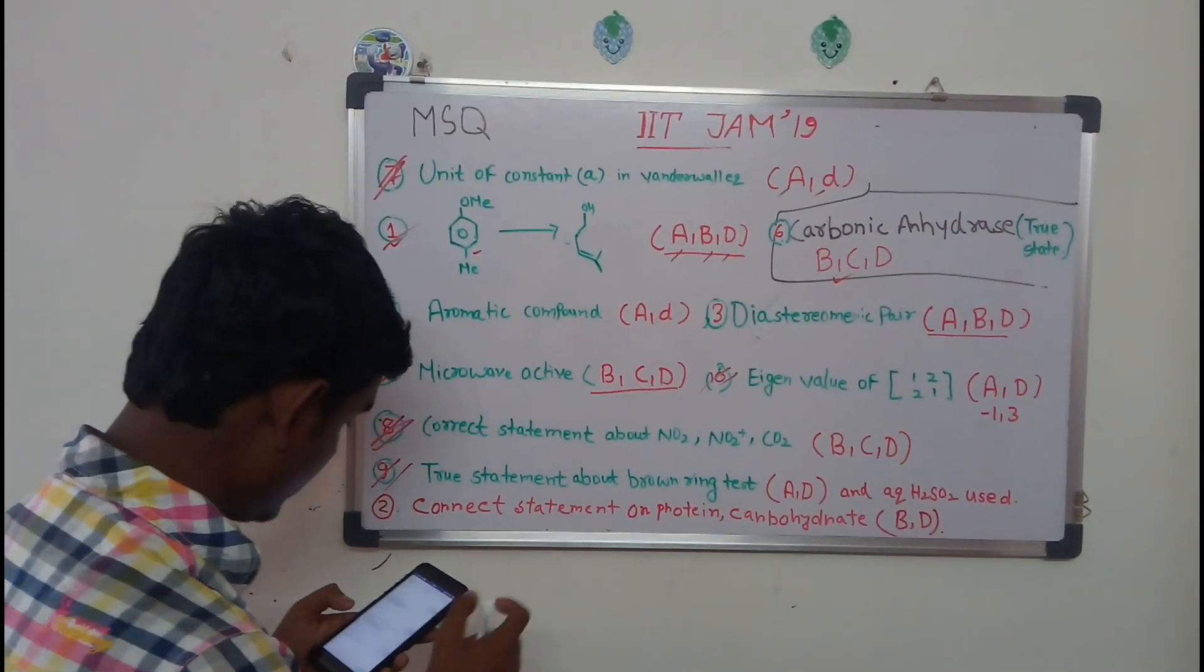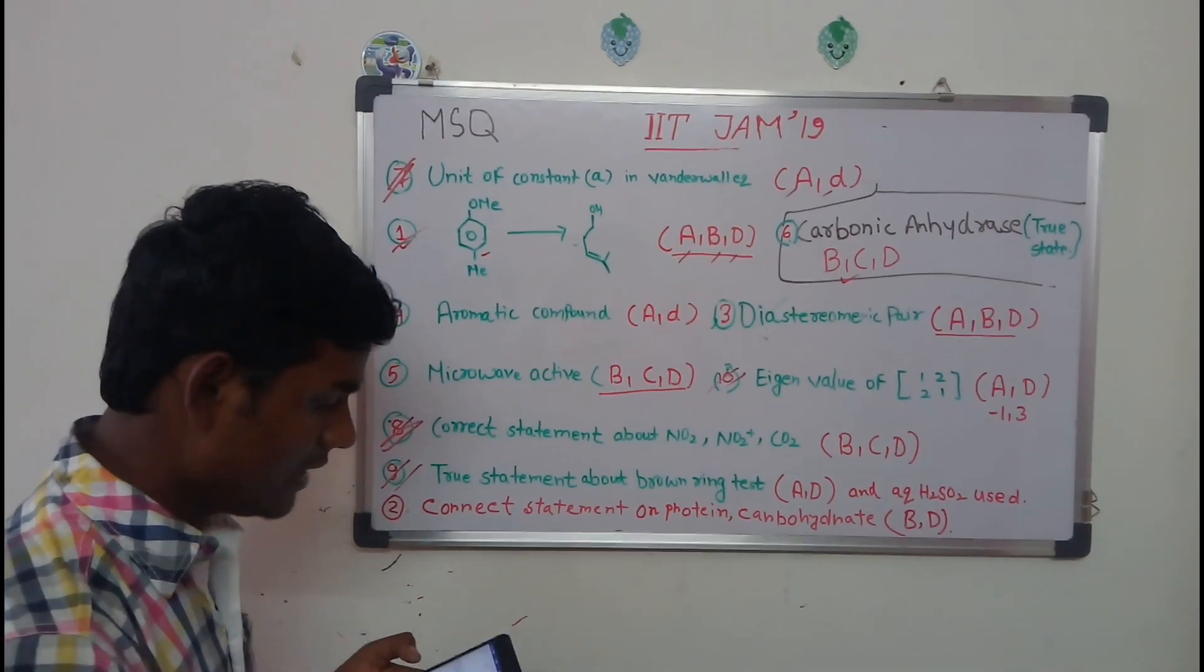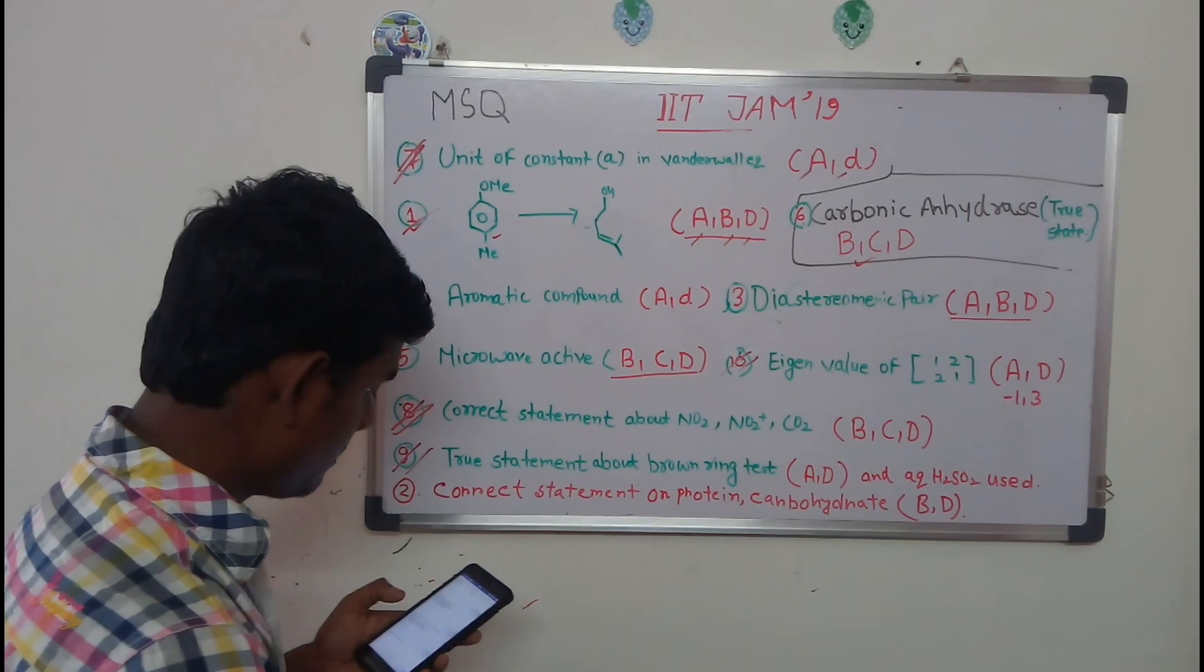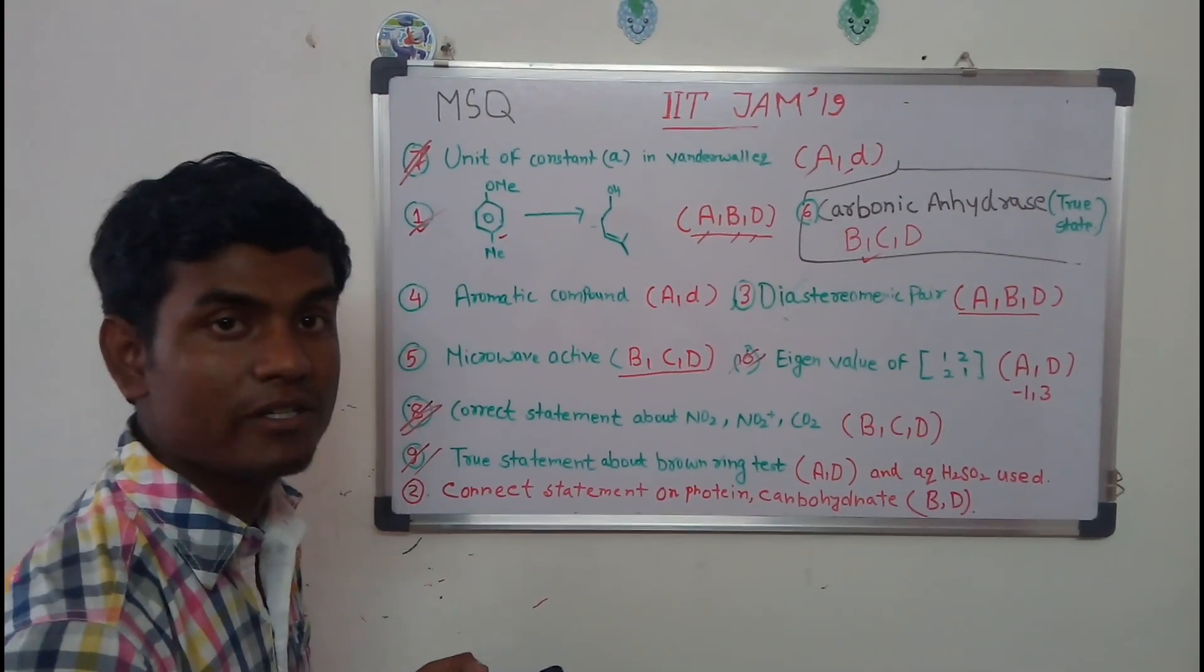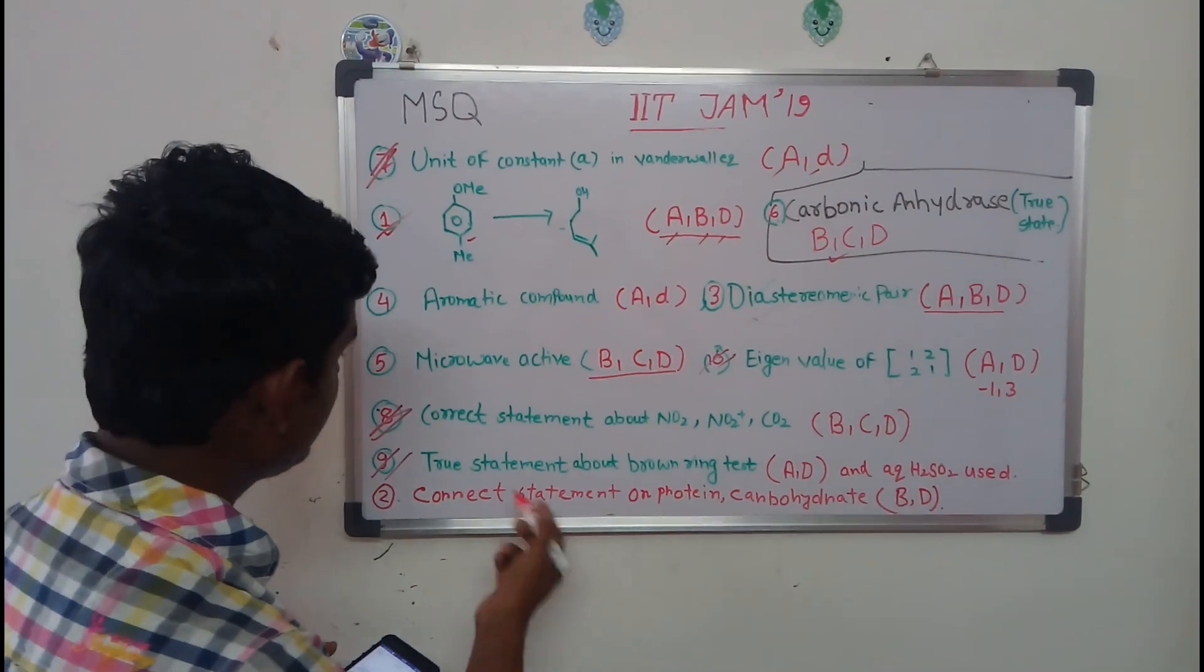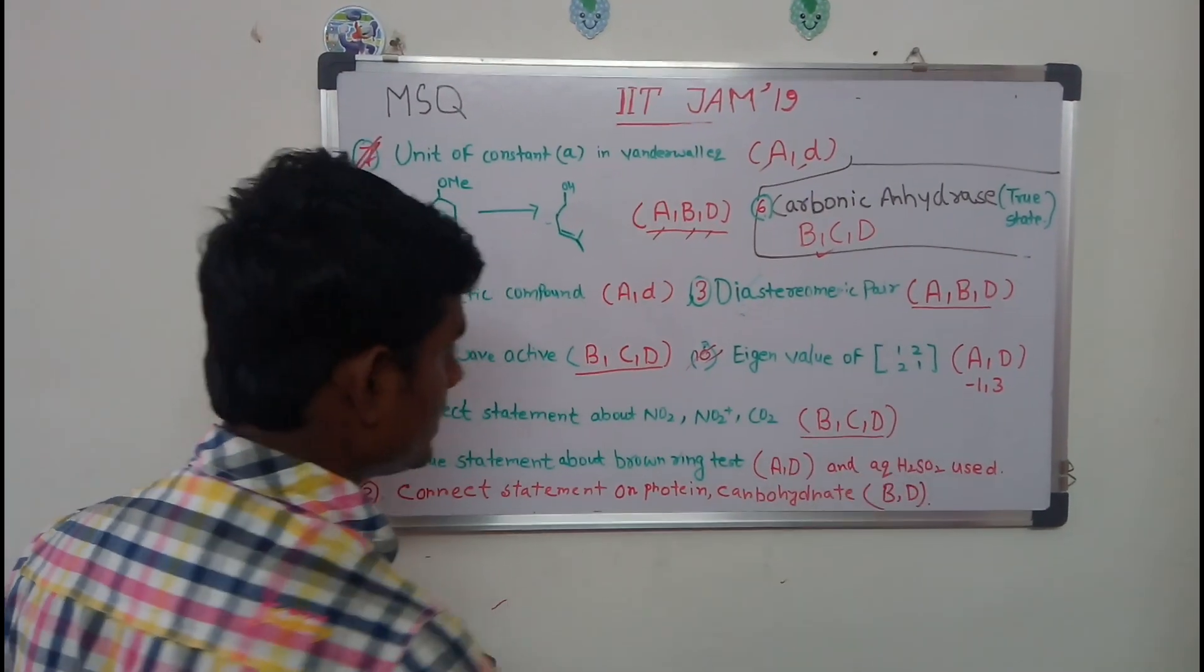I'm going to discuss question number eight here. That is the correct statement about NO2, NO2+, and CO2. The statements are pretty simple: paramagnetism, diamagnetism, linear geometry, isoelectronics. If you calculate the isoelectronics or other things, you will find that B, C, D is the correct answer.